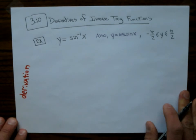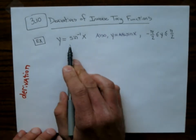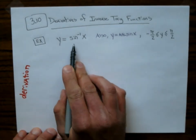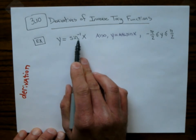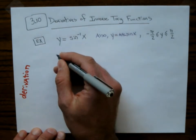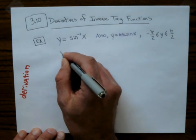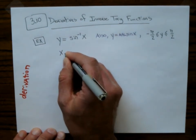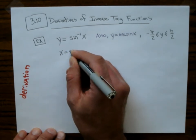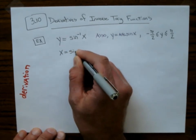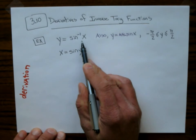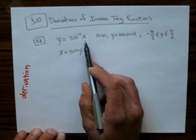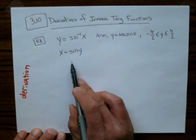This definition applies for y values between negative pi halves and pi halves. What I'm going to do is rewrite this. This is an inverse function, which means I can write this as x equals the sine of y, because that's really what it means — sine of what angle gives you x.